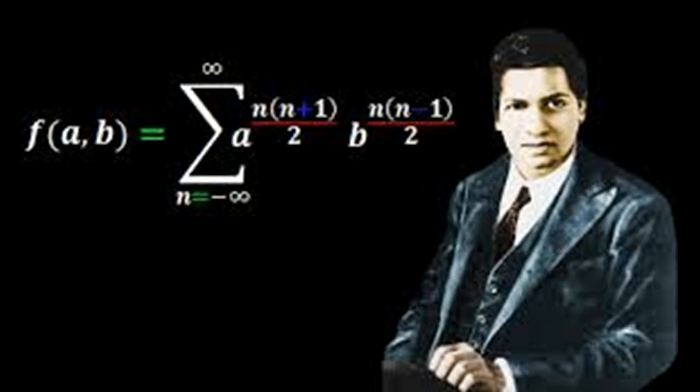In 1913, the British number theorist G.H. Hardy received a strange letter with his morning tea. It came from far away Madras, India.